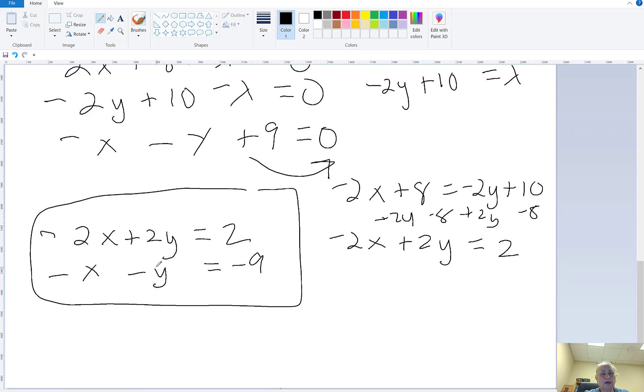If I multiply the bottom one by 2, I can get my y's to cancel out. So that's going to be negative 2x plus 2y equals 2, that's my first equation unchanged. And then negative 2x minus 2y equals negative 18, because I multiply all these by 2. When I add those together, I get negative 4x. The y's will zero out, and then it's going to be equal to negative 16, so x is equal to 4.